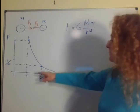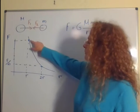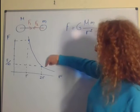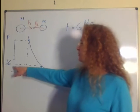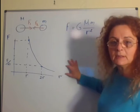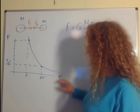That means that if for some distance we have a force F, at the double distance the force becomes four times smaller. At the triple distance it becomes nine times smaller.